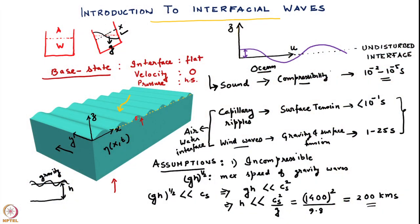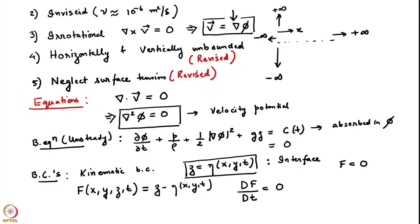We had started looking at interfacial waves. Recall that our base state was one where the interface was flat and the fluid underneath was quiescent. We started our analysis by making a number of simplifying assumptions: the medium would be incompressible, the maximum speed of gravity waves would be much lower than the speed of sound, the medium would be inviscid, the motion would be irrotational, the domain would be horizontally and vertically unbounded, and as a first step we would neglect surface tension. We mentioned we would revisit these assumptions and include surface tension later in our analysis.